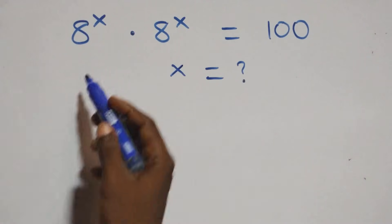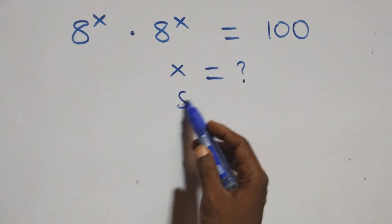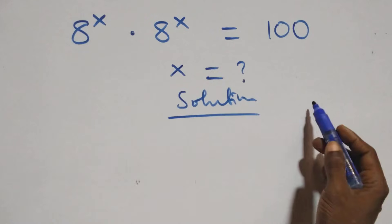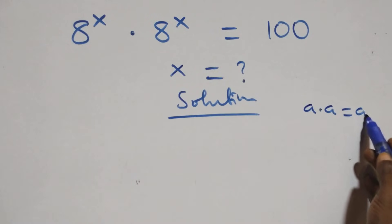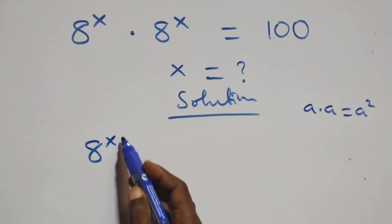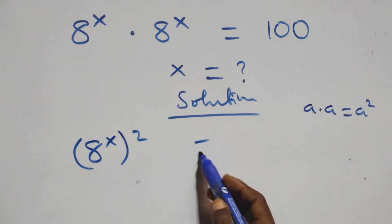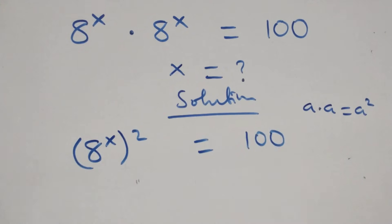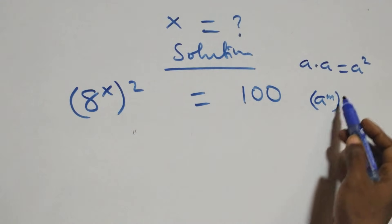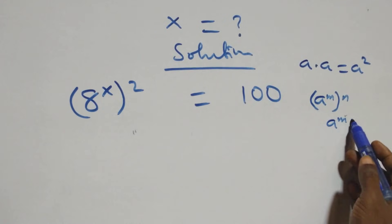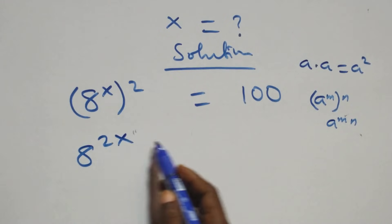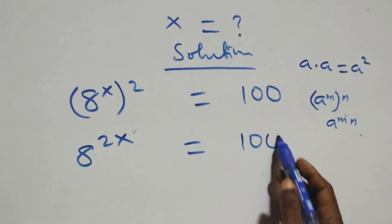Hello, welcome — let's solve this exponential equation. We use the rule that a times a equals a squared, and the rule that a raised to power n raised to power m equals a raised to power mn. Applying these, the left side simplifies to 8 raised to the power 2x, and this equals 100.